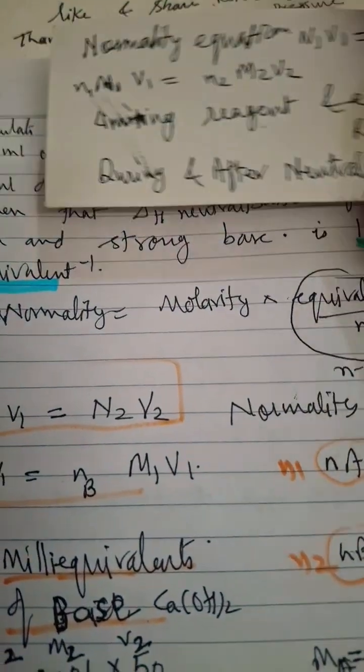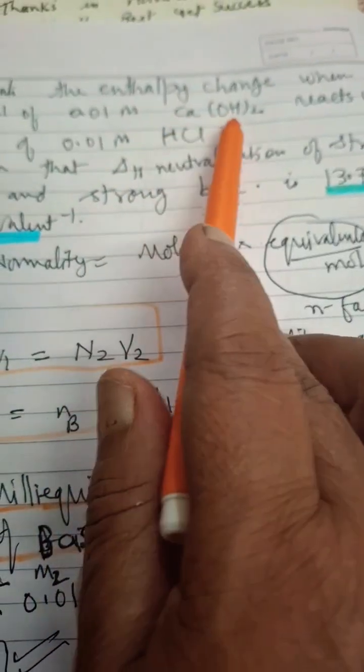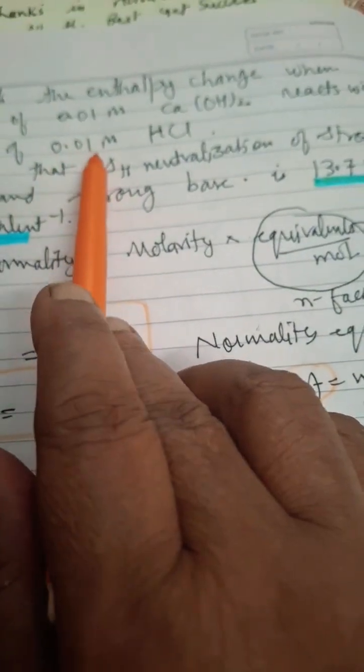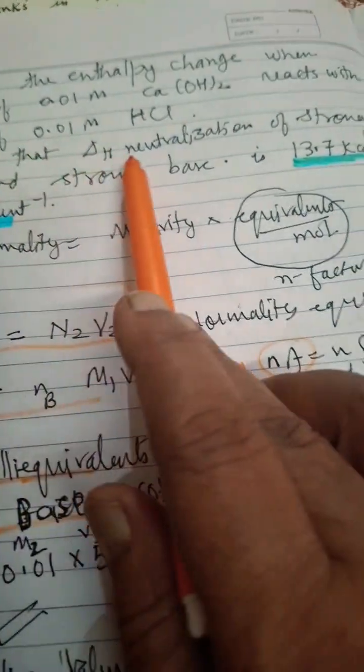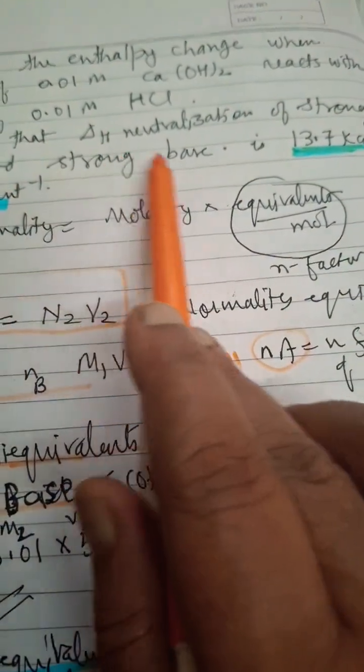Calculate the enthalpy change: 150 ml of 0.01M Ca(OH)2 reacts with 25 ml of 0.01M HCl acid. Given delta H neutralization of a strong acid and a strong base is 13.7 kilocalories per equivalence.